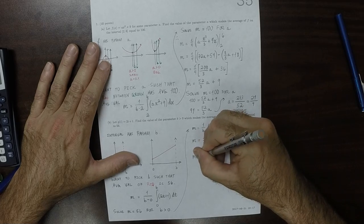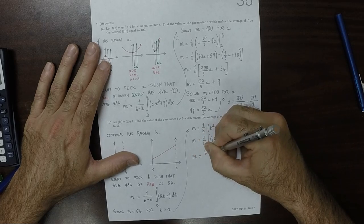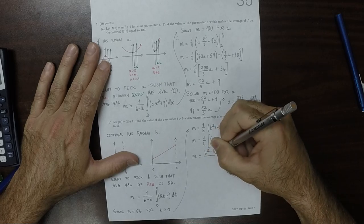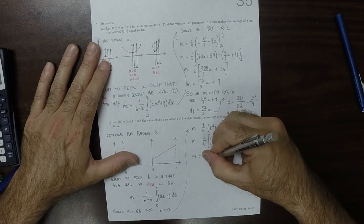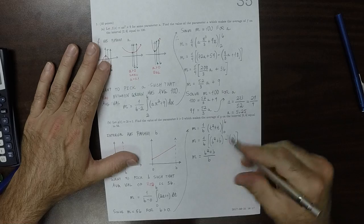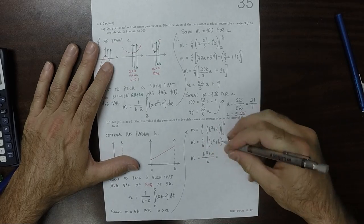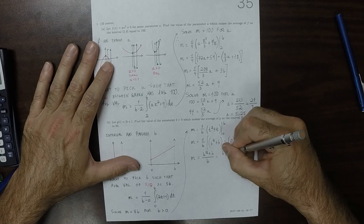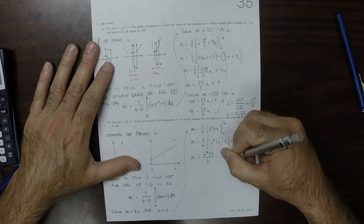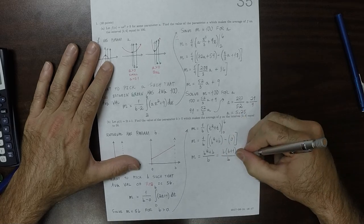So M is B squared plus B over B. You can factor out a B in the numerator and cancel. So that's B multiplied by B plus 1 over B, so that's just B plus 1.